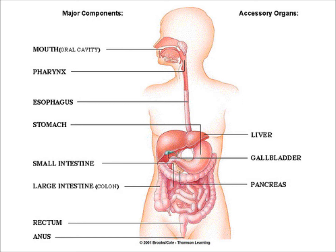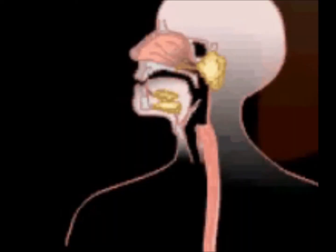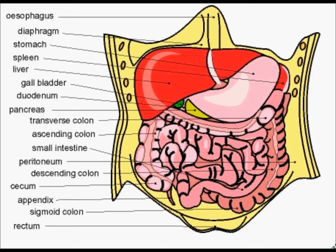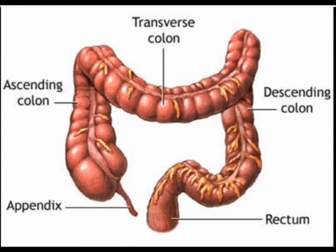Boweldiseases.net explains bodily functions dependent on biochemistry and physiology with pictures, diagrams, and easy-to-understand vocabulary. People understand the initial path food takes — like the mouth, the esophagus, the stomach — but few people understand how the liver and gallbladder interact with the small intestine, and how bacteria in the large intestine influence your digestive system.